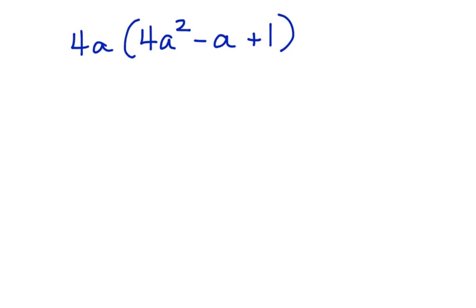Let's do that. 4a times 4a squared is 16a to the third. 4a times a negative a is negative 4a squared.